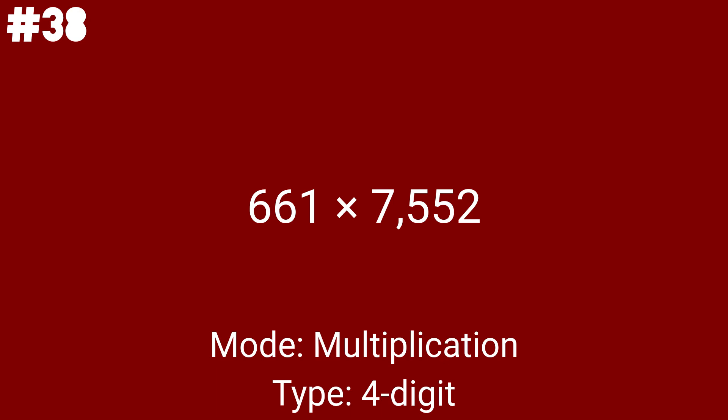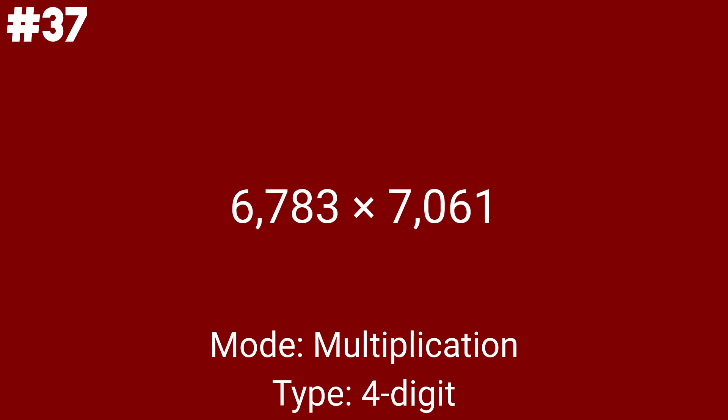The 18th one is 661 times 7552. I forgot that this and the last 2 multiplication problems are not 4 by 4s — instead they are 3 by 4s and 4 by 3s. We are at 6783 times 7061, which is the first 4 by 4. There are only 2 of these in this video. The 20th problem is 1432 times 2602 — the last 4 by 4 and the last multiplication problem with 4 digits.